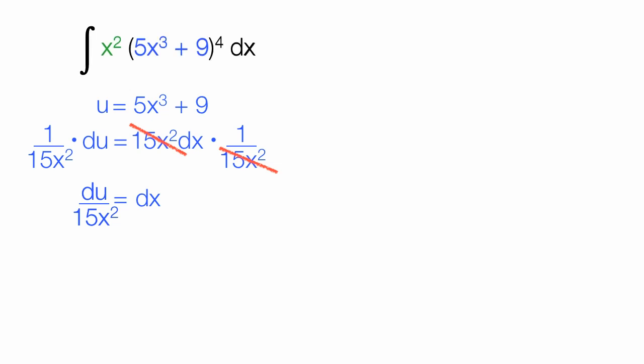Let me copy this over, the top part right there. This 5x cubed plus 9 is the same as that. I'm going to substitute and put u there. And for dx, where dx is, I'm going to put du divided by 15x squared. Notice these x squareds cancel out. This gives me the integral of u to the fourth power divided by 15 du.